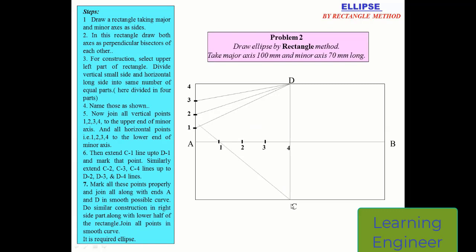From point C we will draw a line which will pass through point number one, and where that line intersects the inclined line one-to-D, that will give us a point. Similarly, from point C we will pass a line through point number two, and that will cut line two-to-D to give another point. In the same way, a line from C through point three will cut line three-to-D, and we join all these points with the help of a French curve.